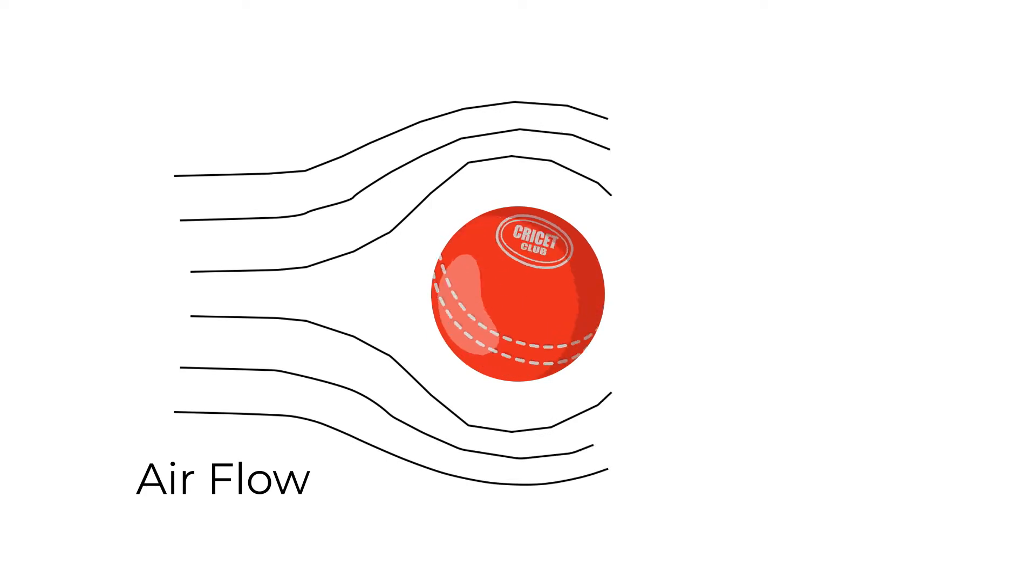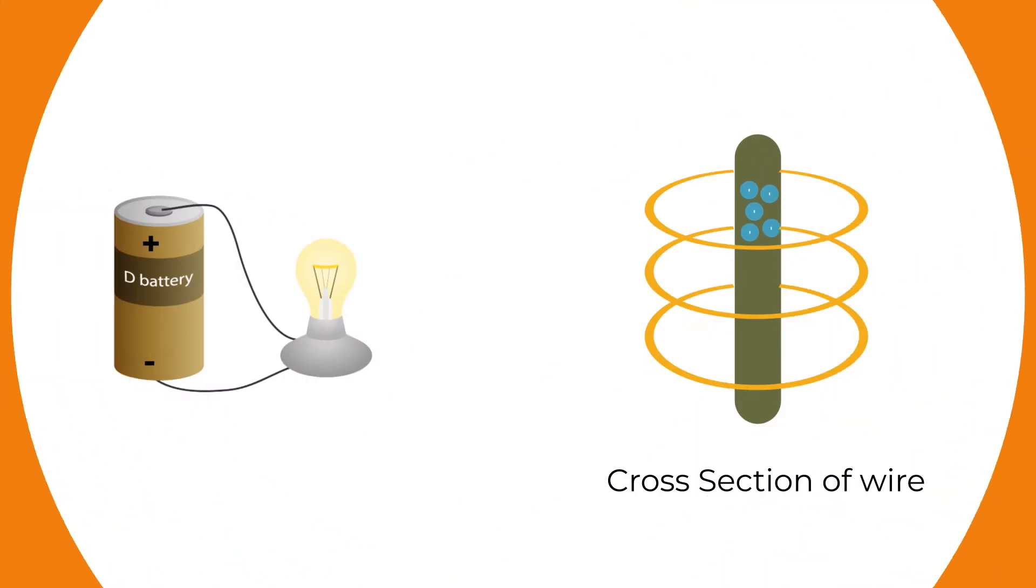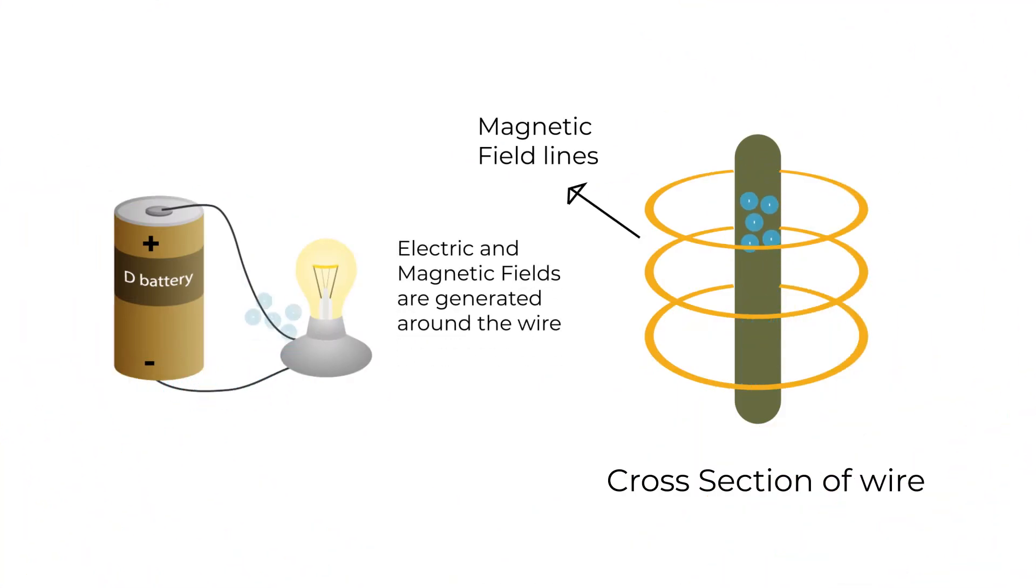When something moves, it causes changes in its surroundings. For example, when a cricket ball moves in the air, it causes surrounding air particles to move with it. But in the case of charges, when they move, they generate electric and magnetic fields in their surroundings.